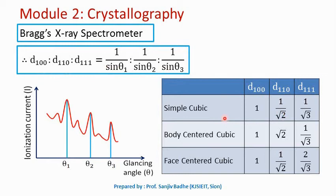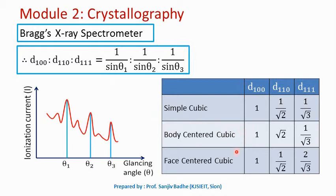Once this ratio is obtained, we compare it with the known ratios for different crystal structures. For simple cubic structure, the ratio is 1 : 1/√2 : 1/√3. For body-centered cubic, the ratio is 1 : √2 : 1/√3. For face-centered cubic structure, it is 1 : 1/√2 : 2/√3. If the ratio calculated in the experiment matches any of these, we can conclude which crystal structure is followed inside the crystal. These ratios are obtained by studying the geometry of the particular crystal structure. This is how Bragg's X-ray spectrometer is used to determine the crystal structure.